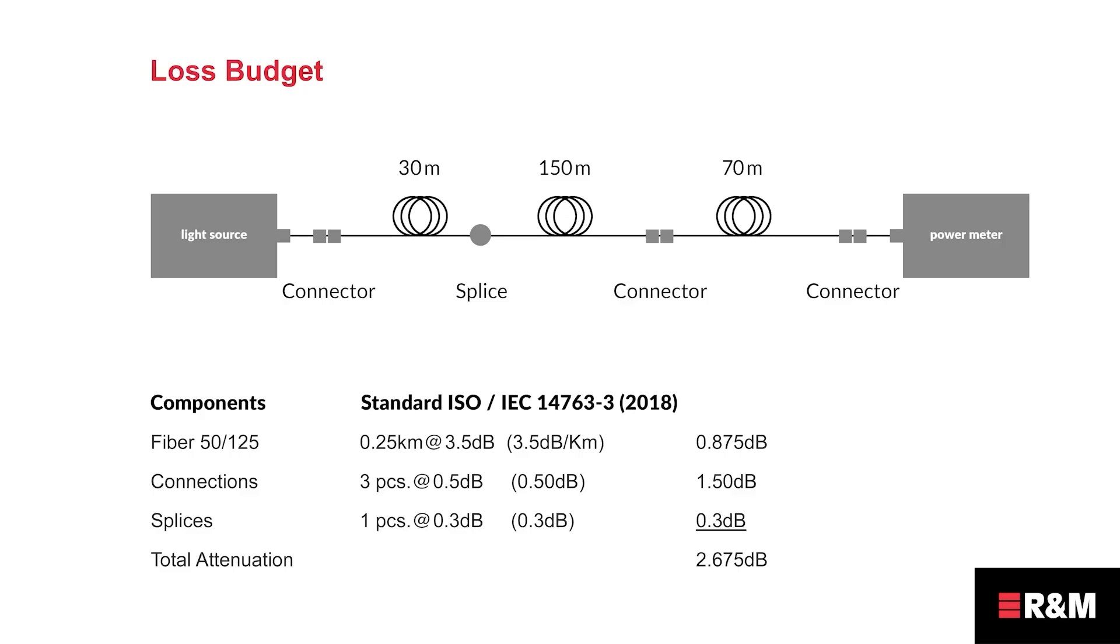The loss budget must be calculated. It is an accumulation of all components within the specific link. This means that all connectors, splices and the entire cable length are included. The specific loss values of the components are added together to give the maximum overall loss. This example shows the values of the standard ISO IEC 14763-3.